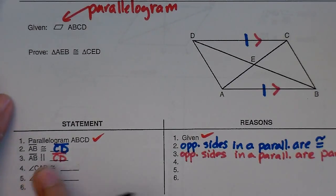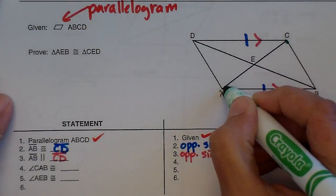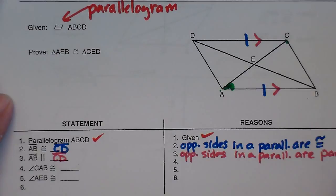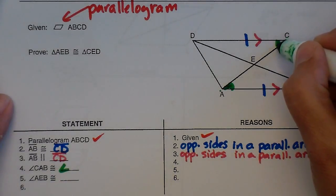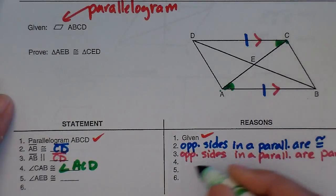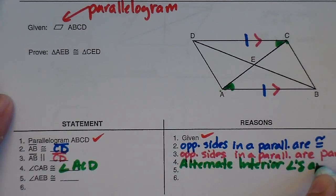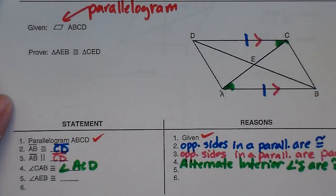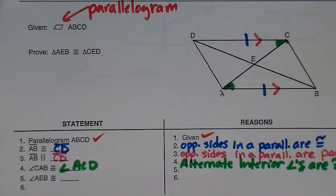So let's look at the next one. Angle CAB. Let's follow it: C, A, B. That's this guy. Angle CAB is congruent to angle ACD. And that is because they're parallel. Alternate interior angles are congruent. So I know that those two guys in green are congruent because they're alternate interior angles.